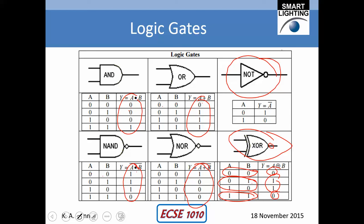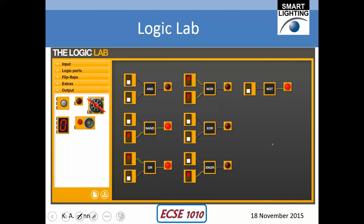So those are logic gates. You want to make a decision; you've got two inputs and you want to compare them in some way. If you want to make a decision based on the fact that they're both high, you would use an AND gate. If you want a decision based on the fact that at least one is high, you would use an OR gate, and so forth.